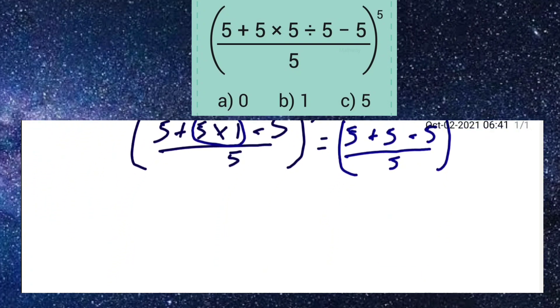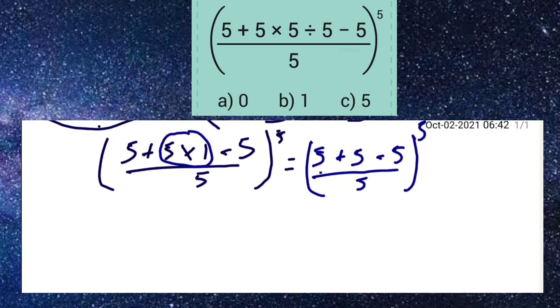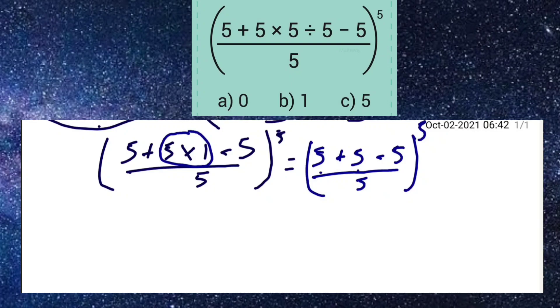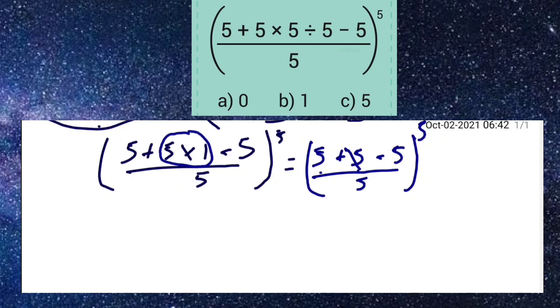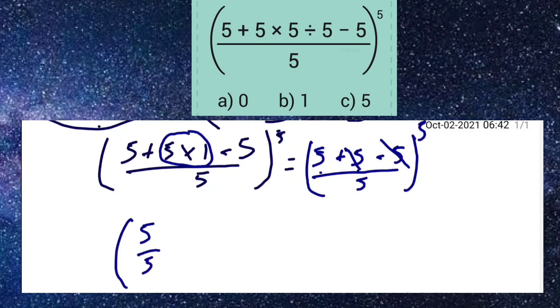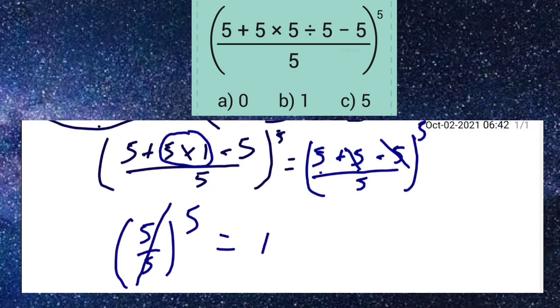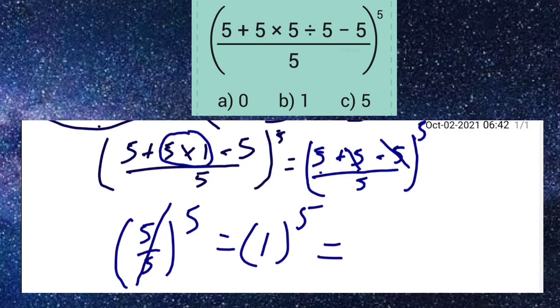Let me explain: 5 plus 5 minus 5 means the 5 minus 5 cancel out. So we have 5 divided by 5, which equals 1. And 1 raised to the power of 5 equals 1.